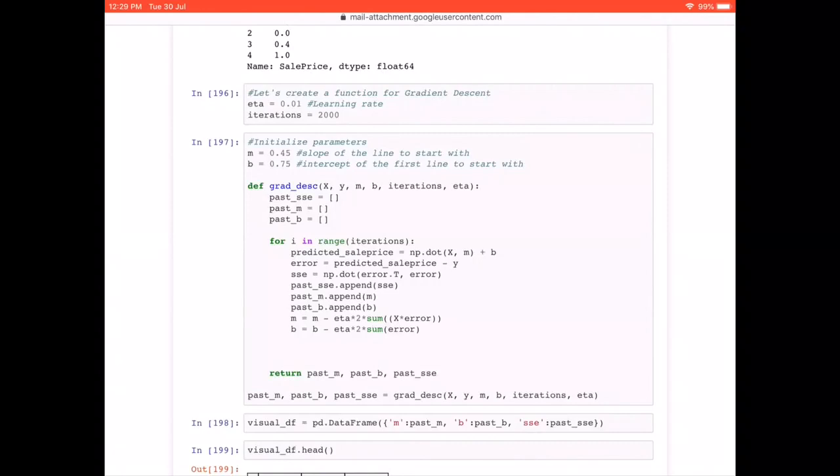And what values are we going to do is, we are going to run a for loop for 2000 times. And first, we are going to calculate the predicted sale price, which we can use by np dot product, we are just doing a dot product between my variable x and my slope m plus b. This is nothing but the equation y is equal to mx plus c, y being the predicted sale price. Once we know the predicted sale price, we are calculating the error is equal to predicted sale price minus y, the original value.